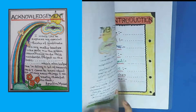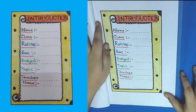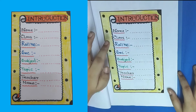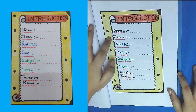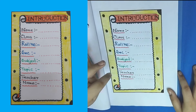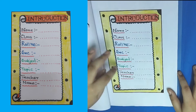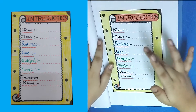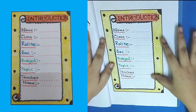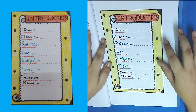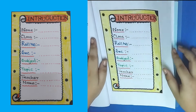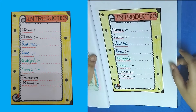This is the introduction page. It has name, class, roll number, section, subject, topic, and your teacher's name. I haven't written anything here — you guys have to fill it up. Also, don't forget these borders — draw them neatly and well so it makes the project look better, a lot better.